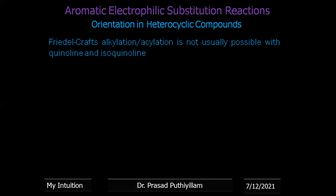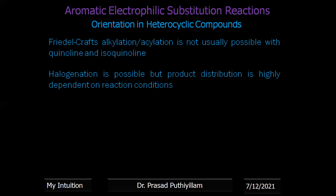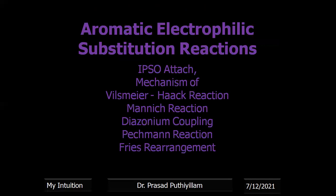Friedel-Crafts alkylation and acylation reaction is generally not possible — best examples are not available in the literature for quinoline and isoquinoline. Halogenation is possible but gives differently oriented products under different reaction conditions. About Ipso attack — a small hint was given in the previous basic organic chemistry class. Further topics including the Vilsmeier-Haack reaction, Mannich reaction, Diazonium coupling reaction, Peckmann reaction, and Price rearrangement — most of them are name reactions — will be discussed in the next class.